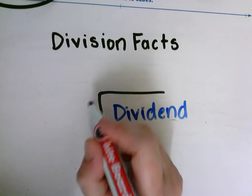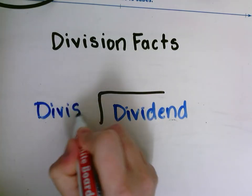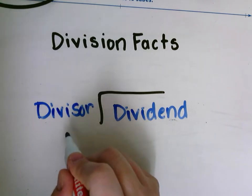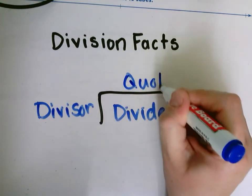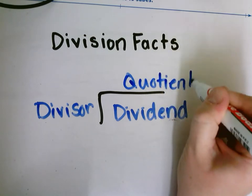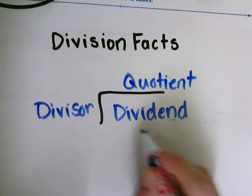Inside we have what's called the dividend. That is a number that is being divided. Over here we have the divisor. That is the number that's doing the dividing. And then on the top we have what's called the quotient. That is our answer. The dividend is the biggest number, this is the big number.